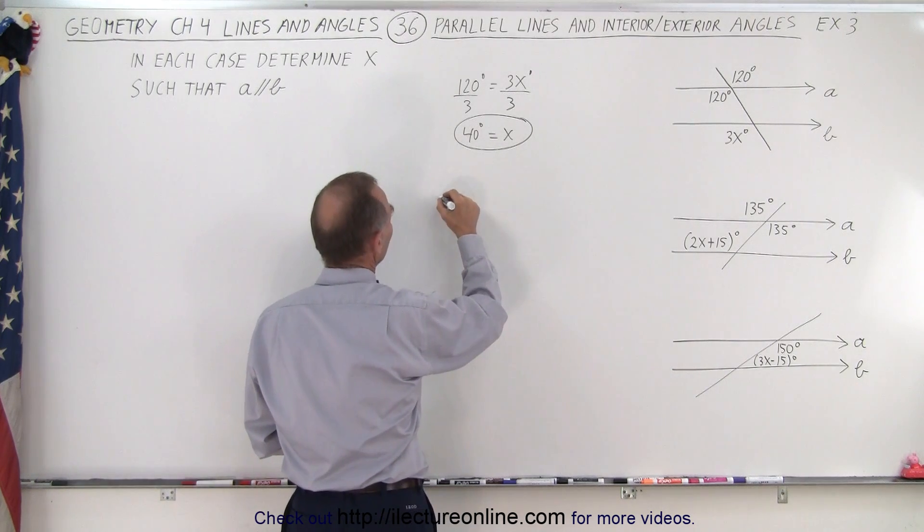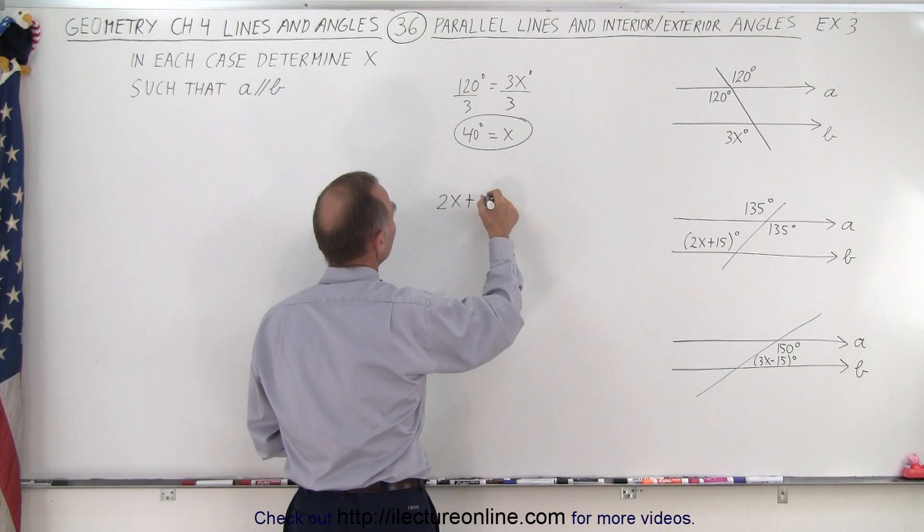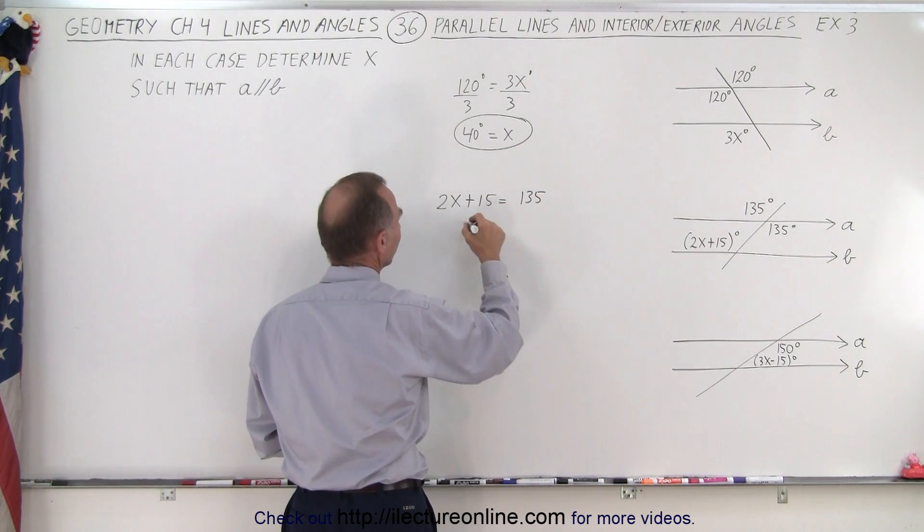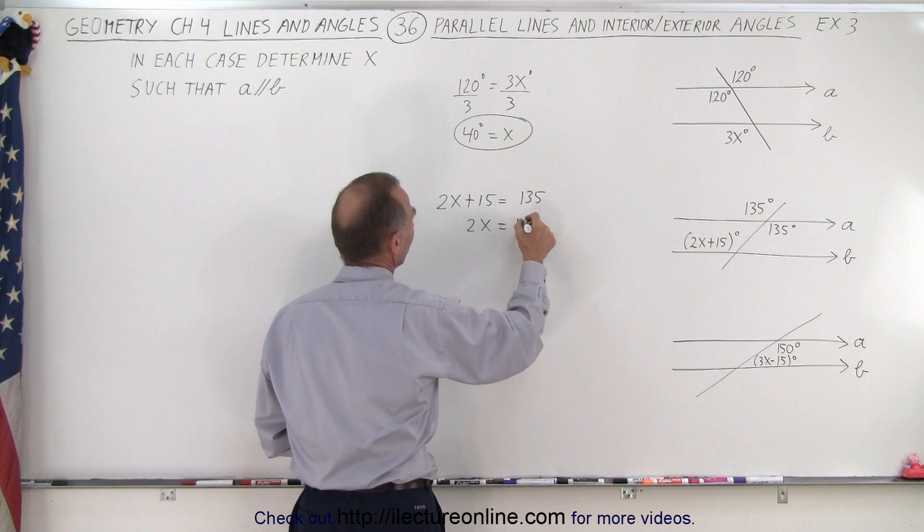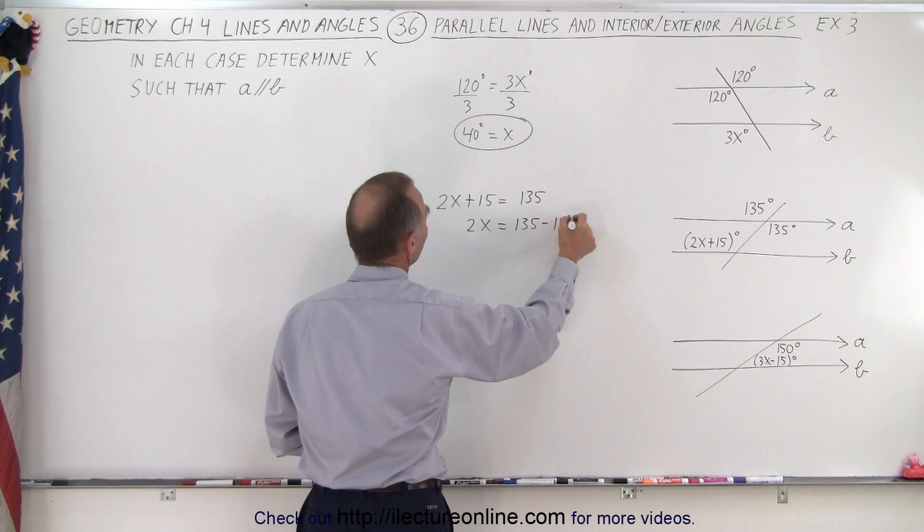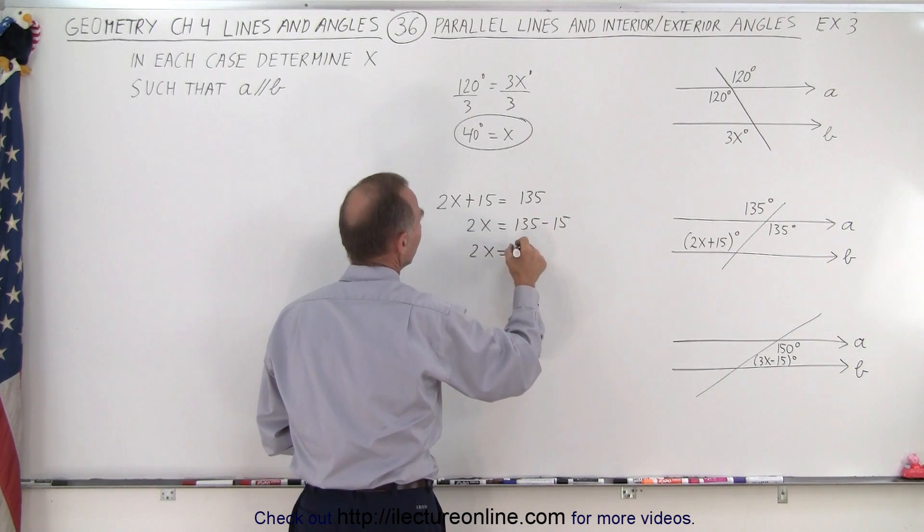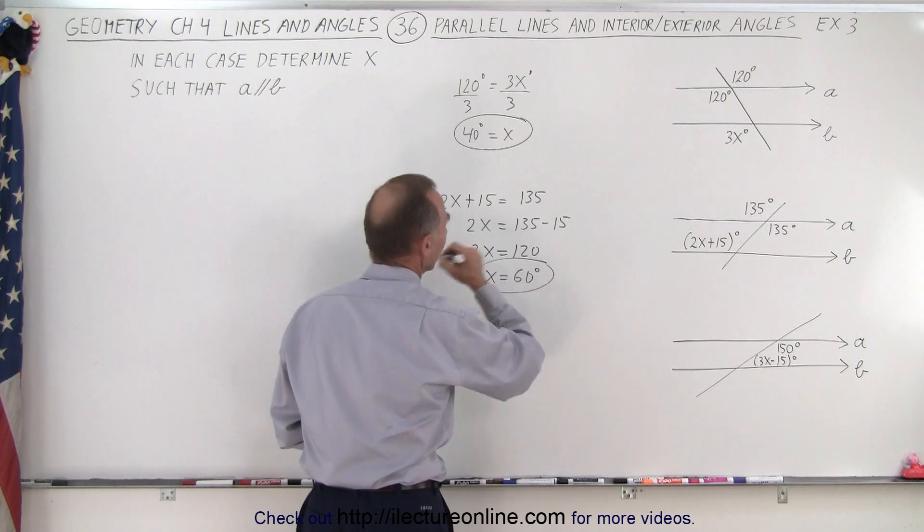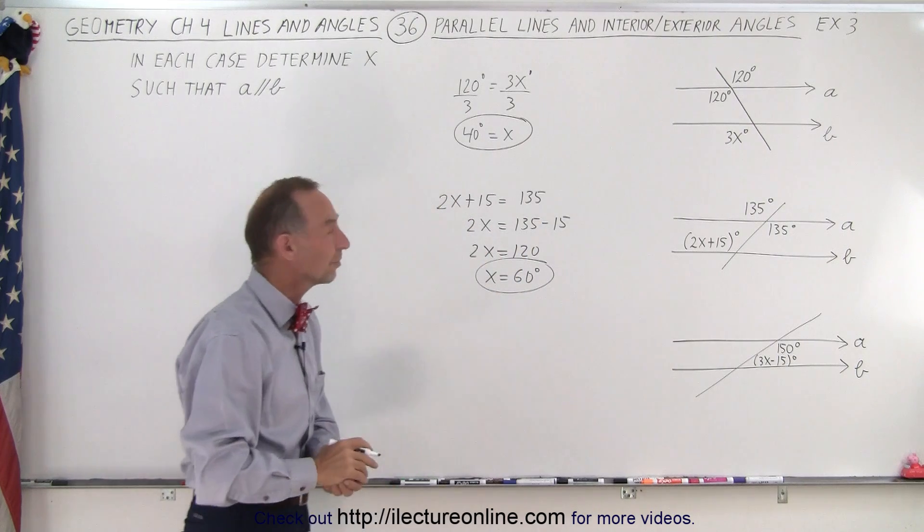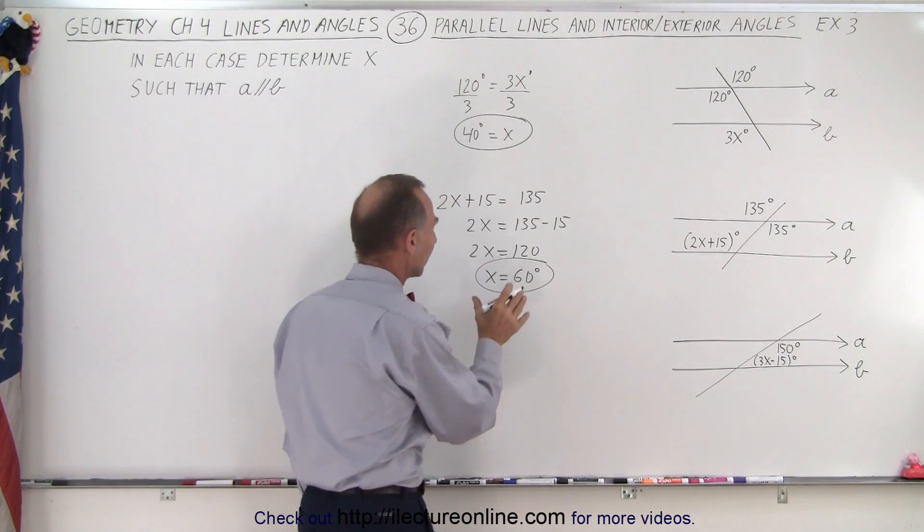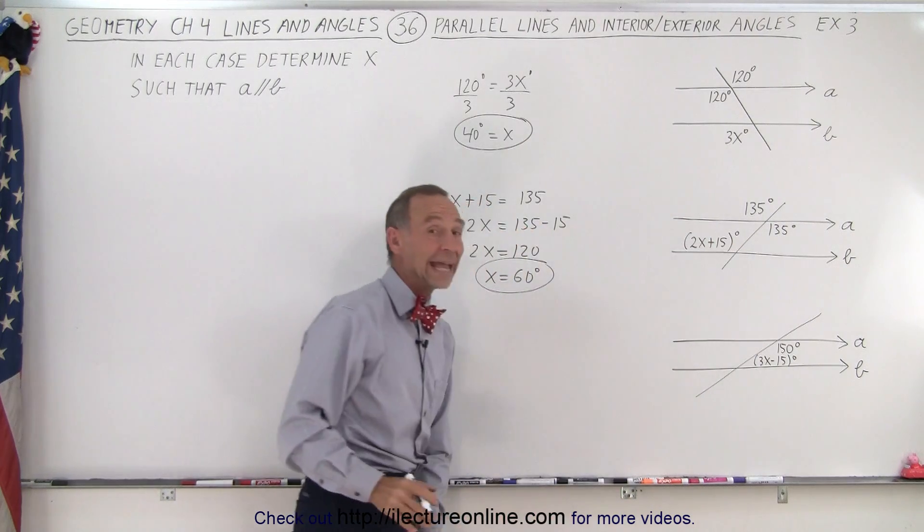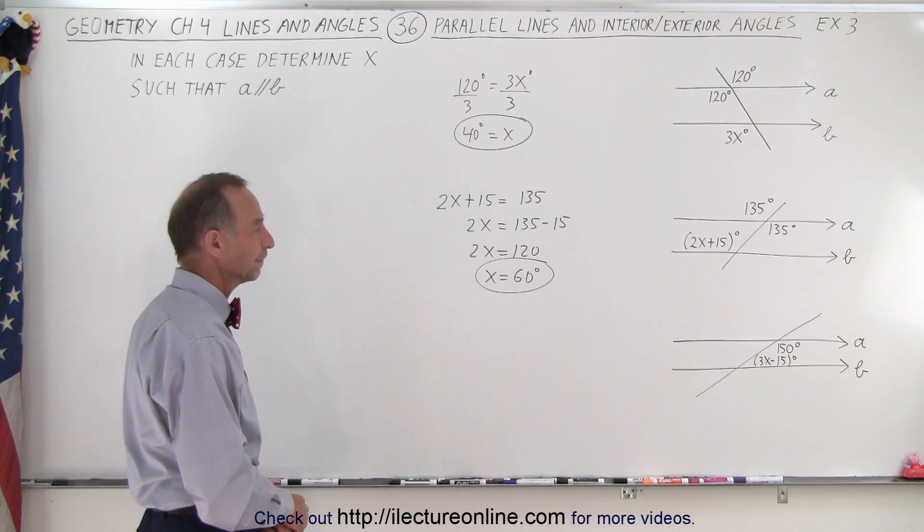So we can write that 2x plus 15 must equal 135. Subtract 15 from each side, so we have 2x equals 135 minus 15, or 2x is equal to 120. Therefore x is equal to 60 degrees. So we know that when x is equal to 60 degrees in case two, lines a and b are parallel to one another.